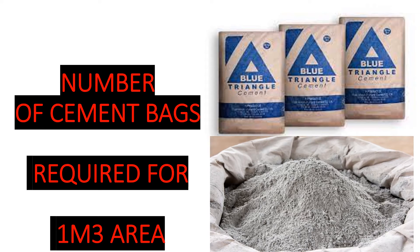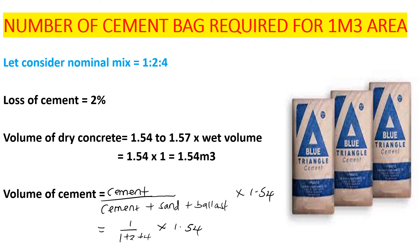We are going to consider a nominal mix of 1:2:4, and we will also consider a 2% loss of cement, since a bag is 50 kg but we are not going to get the exact 50 kg in practice.